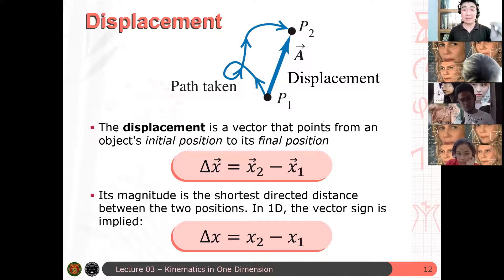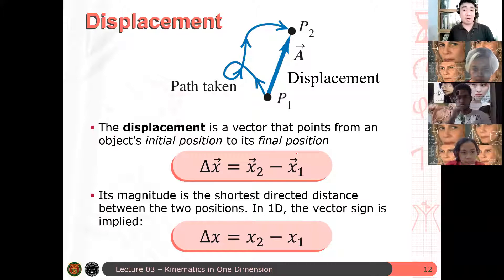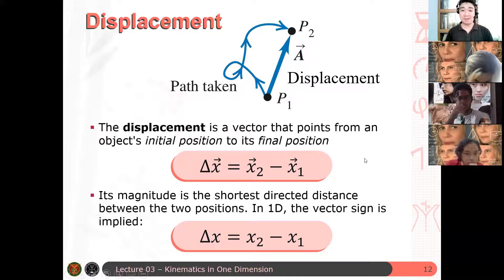So again, a displacement is that vector that points from initial position to some final position. Hindi usually involve an origin sa displacement. But of course, if you know your, since both vectors, the initial and the final position of the object is with respect to the origin of your coordinate system, meron may indirect involvement si origin dito sa definition. May questions ba? None so far.